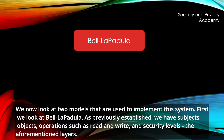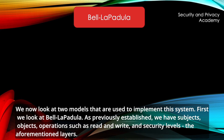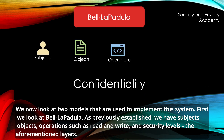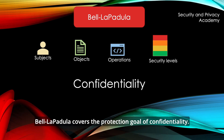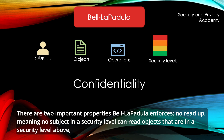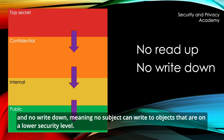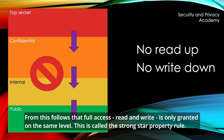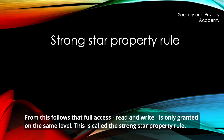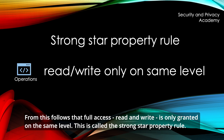First, we look at Bell-Lapadula. As previously established, we have subjects, objects, operations such as read and write, and security levels — the aforementioned layers. Bell-Lapadula covers the protection goal of confidentiality. There are two important properties Bell-Lapadula enforces: no read-up, meaning no subject in a security level can read objects that are in a security level above, and no write-down, meaning no subject can write to objects that are on a lower security level. From this follows that full access — read and write — is only granted on the same level. This is called the strong star property rule.